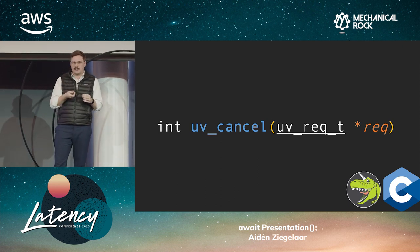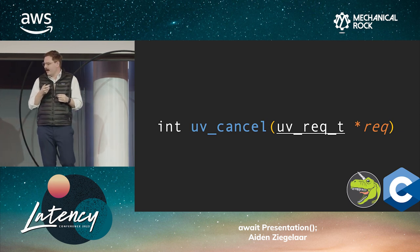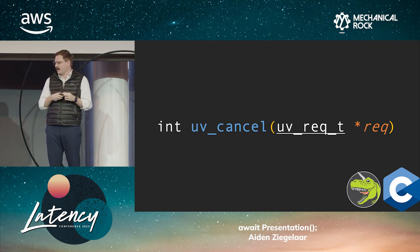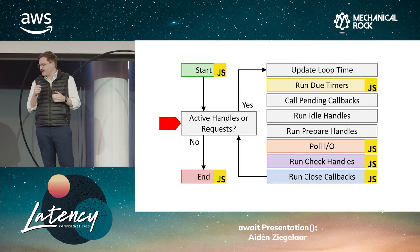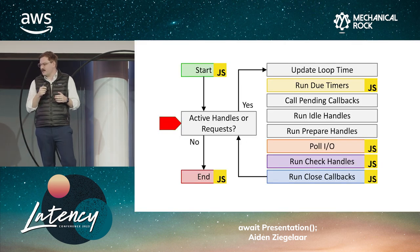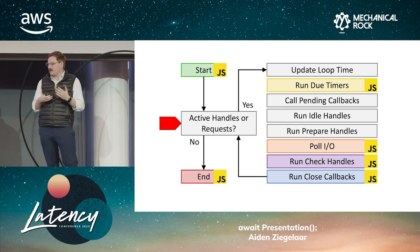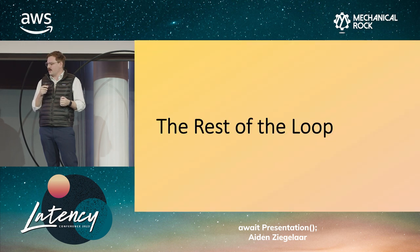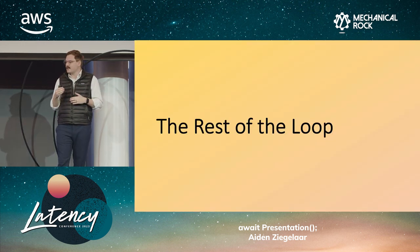Node.js makes use of the UV cancel API to interact with the underlying event loop to cancel that in-flight work. So now we know what's happening at the active handles or requests question. We know when we're going to exit, when we're going to continue, and all that sort of stuff. So the real question now is: what's happening in the rest of the loop?